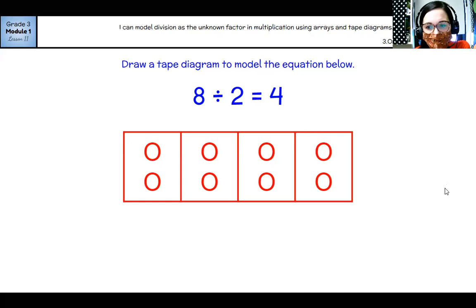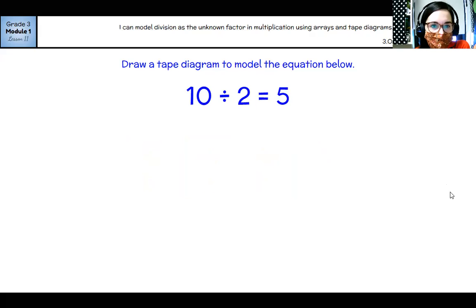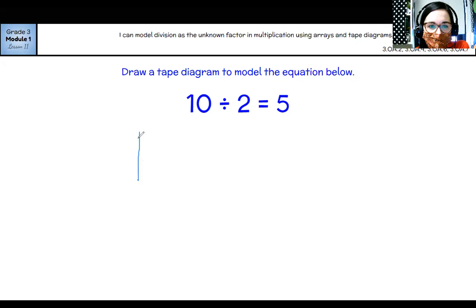All right. Let's try another one. Now we're going to draw it. So draw a tape diagram to model the equation below. I like to think of this like an object. So if I have 10 pencils and I give two pencils to each kid, how many kids will I give pencils to before I run out? So I give two pencils to this student and I have 10 to give away. I give two to this student. I give two to the student. I give two to the student.